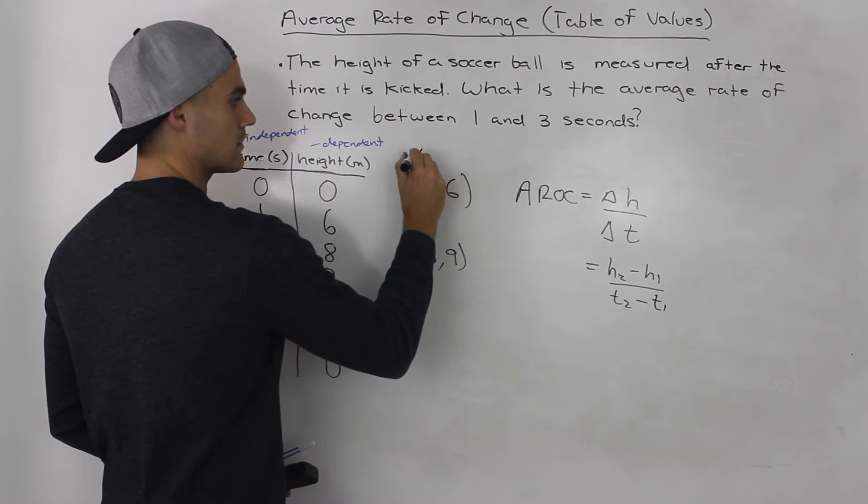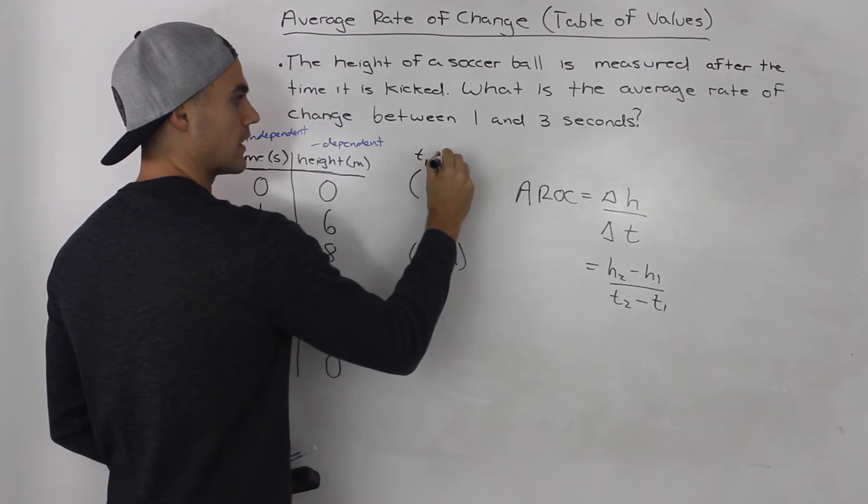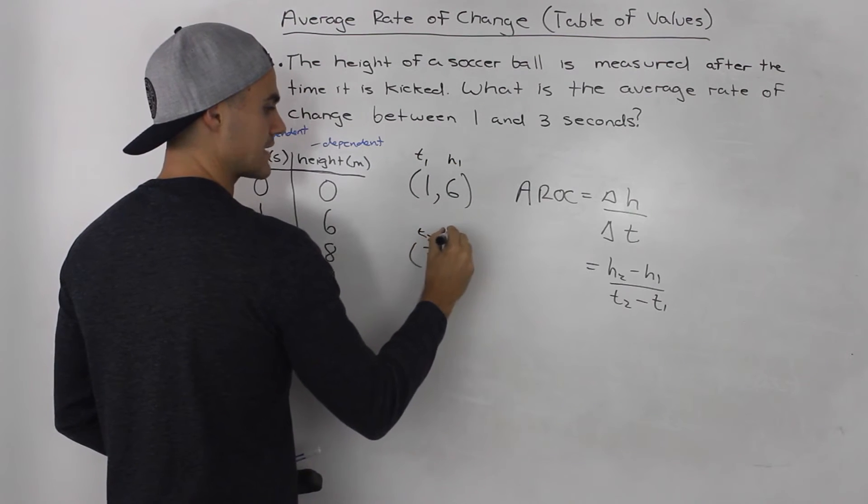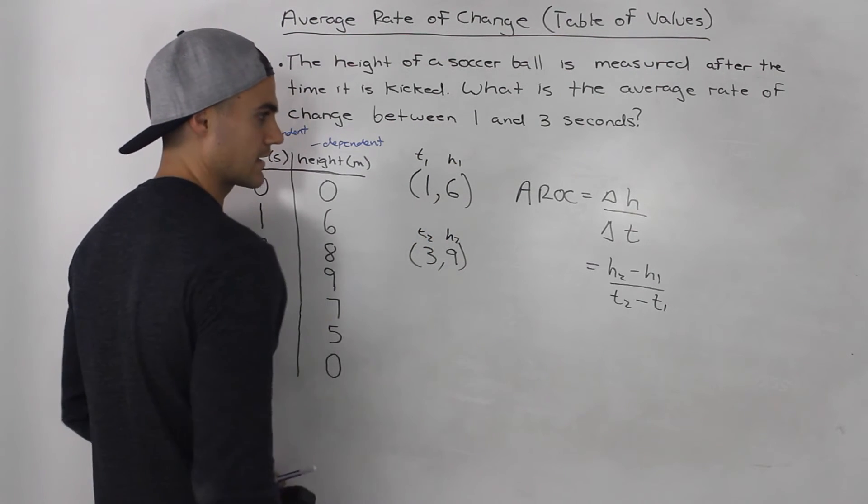So this here, let's say, is t1 and h1. This is the second time and the second height.